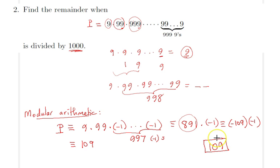So therefore the answer to this problem is 109. When this product is divided by 1000, the remainder would be 109, and that solves our problem.